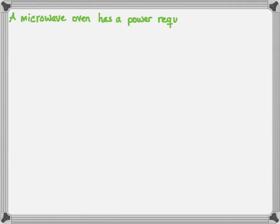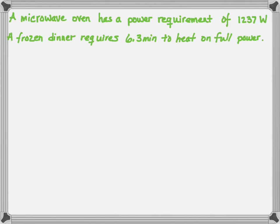This problem deals with a microwave oven that has a power requirement of 1237 watts. A frozen dinner requires 6.3 minutes to heat on full power. The question is how much electrical energy in units of kilowatt hours is used.